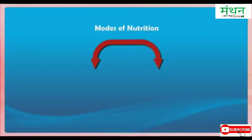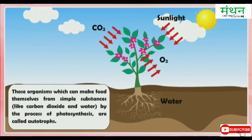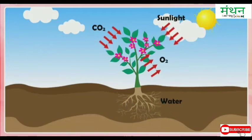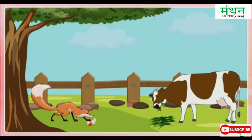Modes of nutrition. All organisms can be divided into two main groups: autotrophs and heterotrophs. Autotrophs are organisms which can make food themselves from simple substances like carbon dioxide and water by the process of photosynthesis — for example, green plants. Heterotrophs are organisms which cannot make their own food and take food from green plants or animals. All non-green plants and animals including human beings are heterotrophs.